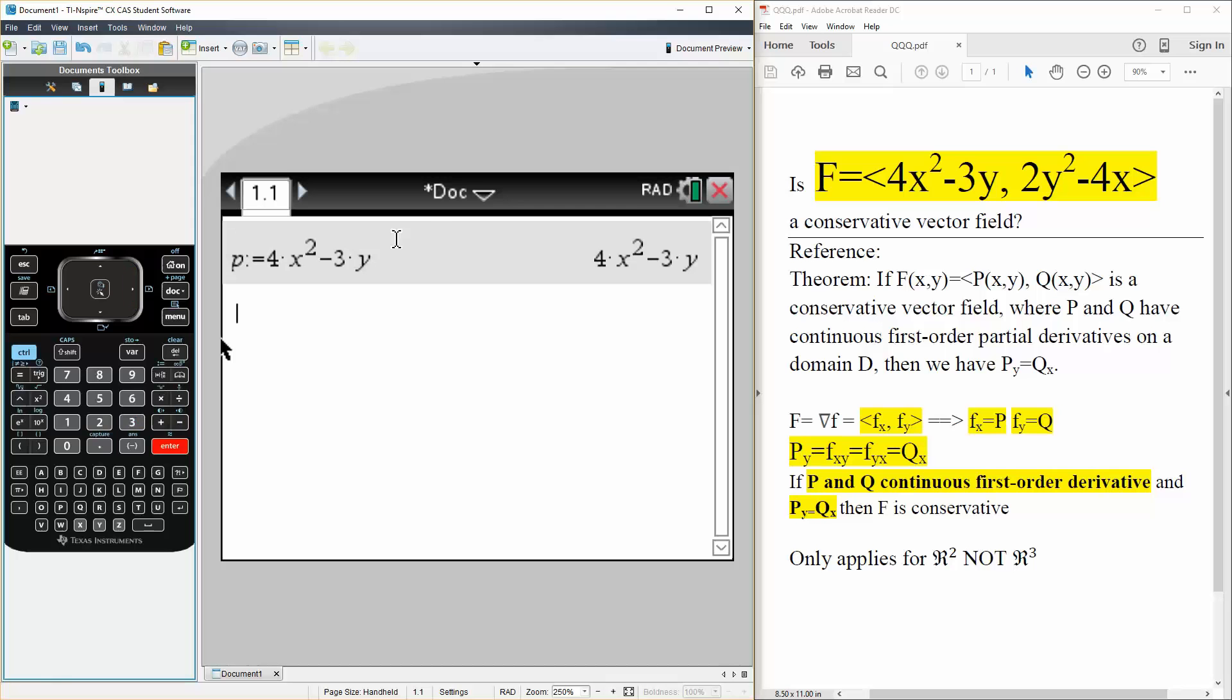and our Q term would be this. So Q is defined as we have 2y squared minus 4x.